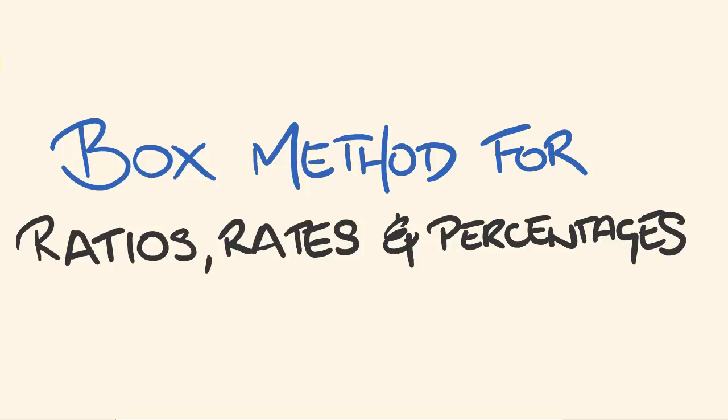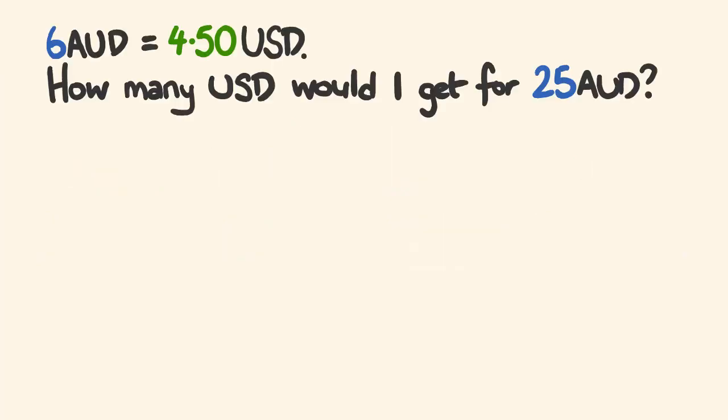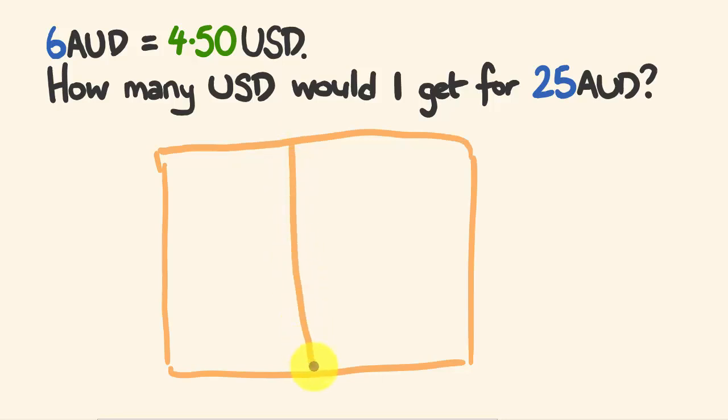It's called the box method. So I'll show you how to do this. I think I'll just launch straight into an example. Alright, the first question. 6 Australian dollars is equal to $4.50 US. How many US dollars would I get for 25 Australian dollars? So the way that we do this method is we draw up a box, hence the name of the box method.